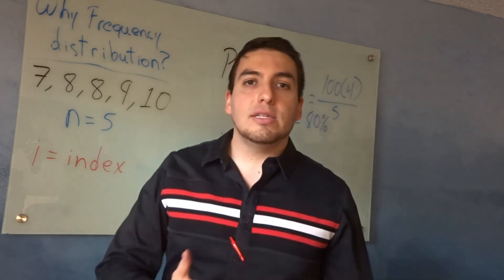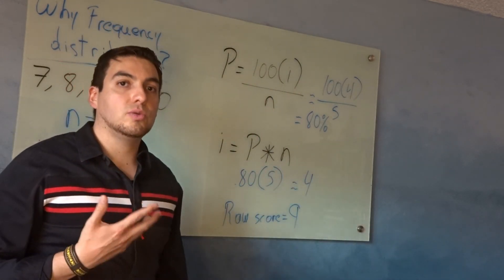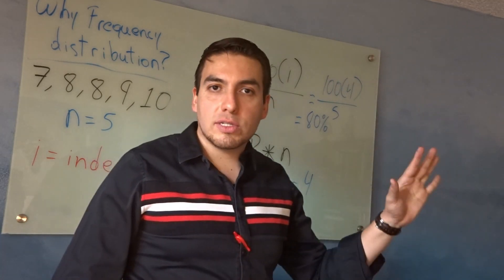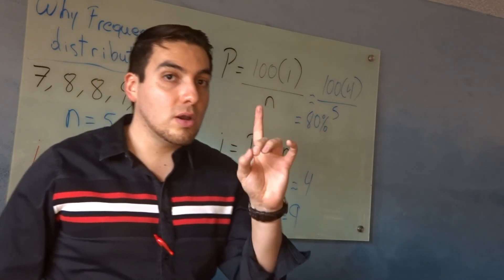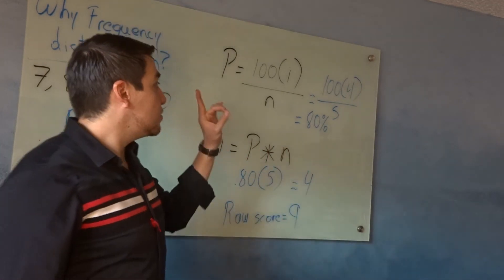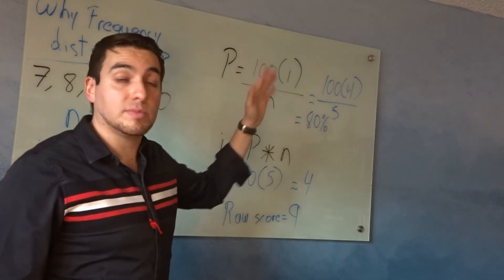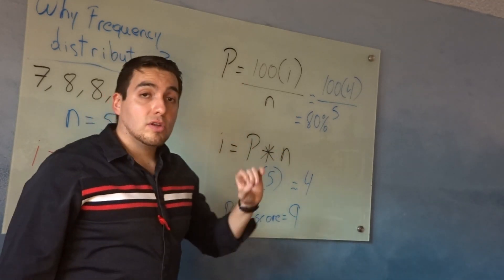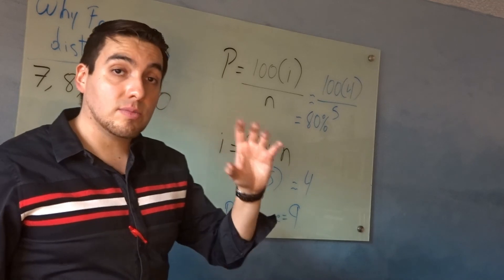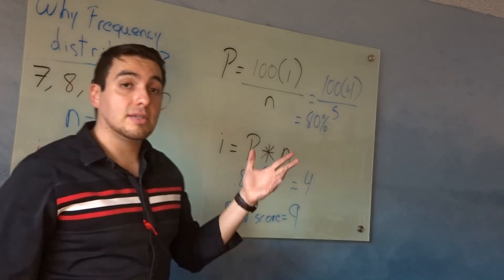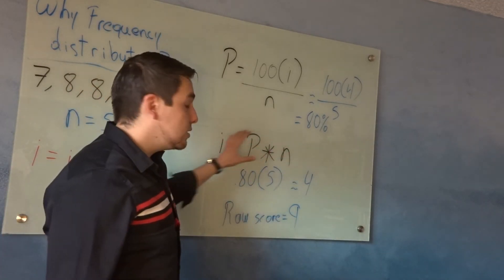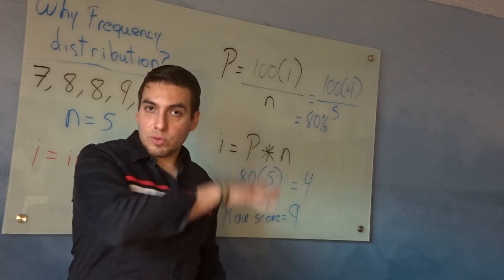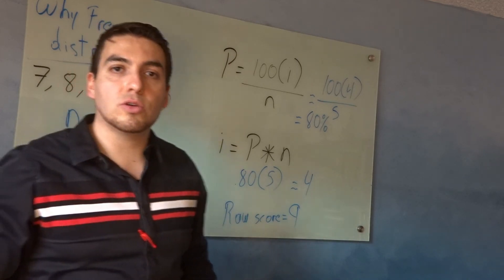It depends on what your interest is — that determines which computation to use. If you want to describe all the data, do the full frequency distribution. If you want the percentile of a specific number, use the first formula. If you want the raw score corresponding to a specific percentile, use the second formula. Different tools for different purposes. Make sure you review this — looking forward to your homeworks!